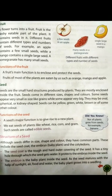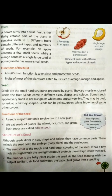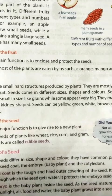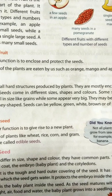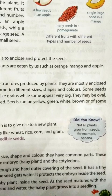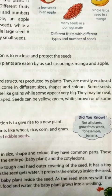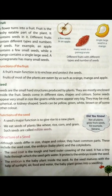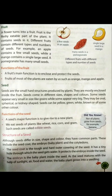Seed. Seeds are the small hard structures produced by plants. They are mostly enclosed inside the fruit. Seeds come in different sizes, shapes, and colors.